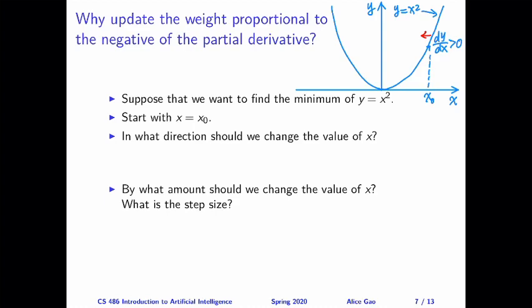Let's try the other side. Well, for the other side, suppose we start with x0 value on the other side. At this point, the derivative is negative. The curve is decreasing. And how do we want to change x? Well, we want to move x to the right. So we want to increase the value of x. So similarly, if the derivative is negative, we want to increase the value. So we want to change it in the direction of the negative of the derivative.